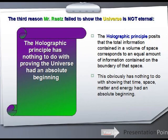The third reason why Mr. Ross failed to prove the universe is not eternal is because the holographic principle has nothing to do with proving the universe had an absolute beginning.